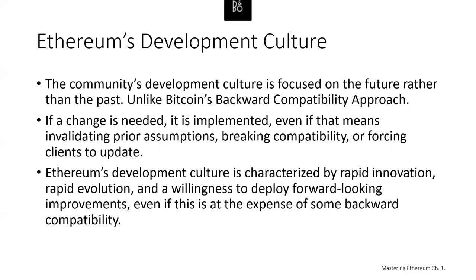Let's talk about Ethereum's development culture. We've talked about how Ethereum's goals and technologies differ from those of other blockchains that preceded it, like Bitcoin. Ethereum also has a very different development culture. In Bitcoin, development is guided by conservative principles — all changes are carefully studied to ensure that none of the existing systems are disrupted. Changes in Bitcoin are only implemented if they are backwards compatible; existing clients are allowed to opt in, but will continue to operate if they decide not to upgrade. In Ethereum, by comparison, the community's development culture is focused on the future rather than the past. Ethereum has, to a certain extent, copied Facebook's mantra of moving fast and breaking things. If a change is needed, it is implemented even if that means invalidating prior assumptions, breaking compatibility, or forcing clients to update. Ethereum's development culture is characterized by rapid innovation, rapid evolution, and a willingness to deploy forward-looking improvements, even at the expense of some backward compatibility.